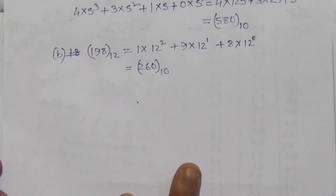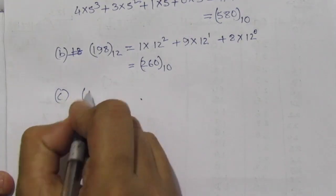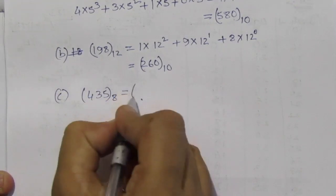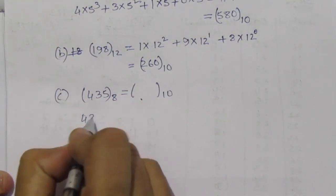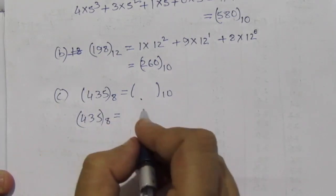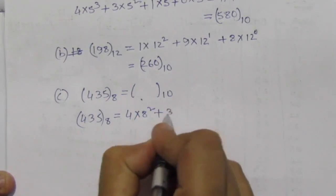Now let us see the third part (c): we have to find out (435) base 8 equal to what in decimal. So (435) base 8 equals 4 into 8 square plus 3 into 8 to the power 1 plus 5 into 8 to the power 0, which equals (285) base 10.